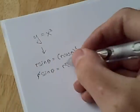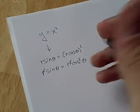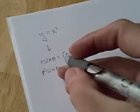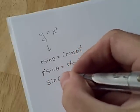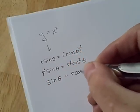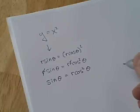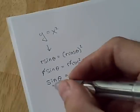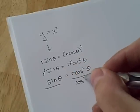Let's divide both sides by r, and then we'll have sine theta equals r cosine squared theta. Now let's divide both sides by cosine squared theta.